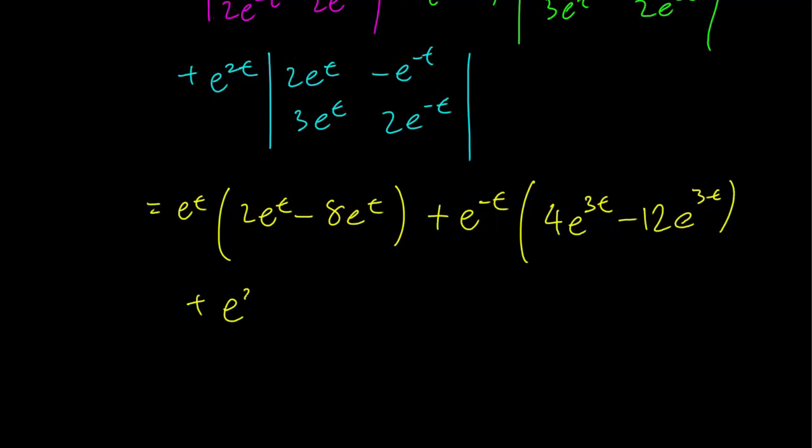e^(2t) plus 4, plus 3. And that should get us our equation. So notice you can factor out e^(2t) from all of these. That's just going to be 2 minus 8 plus 4 minus 8 plus 4 minus 12 plus 4 plus 3.